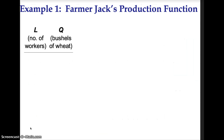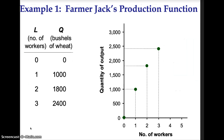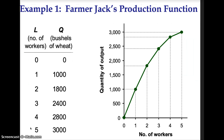L stands for the number of workers, and Q stands for quantity — in this case, bushels of wheat. On a graph, quantity of output is on the vertical axis and labor, or number of workers, is on the horizontal axis. When there are 0 workers, quantity is 0. One worker can produce 1,000 bushels of wheat. Two workers can produce 1,800, three workers 2,400, four workers 2,800, and five workers can produce 3,000 bushels of wheat.